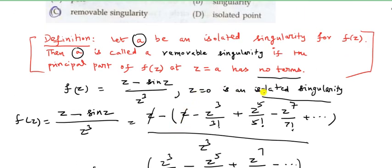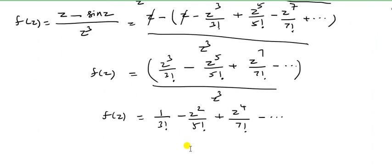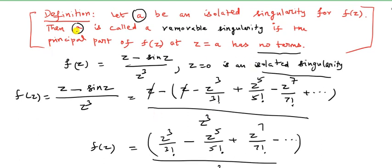Therefore z equal to 0 is an isolated singularity, and z equal to 0 is called a removable singularity, because the principal part has no terms.